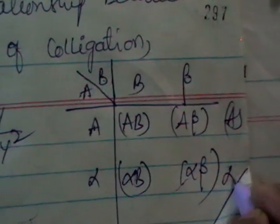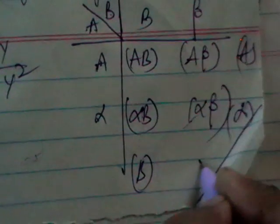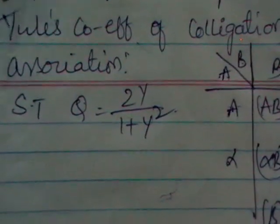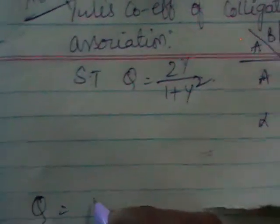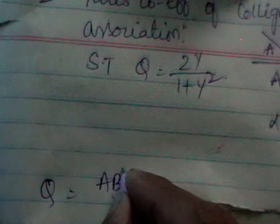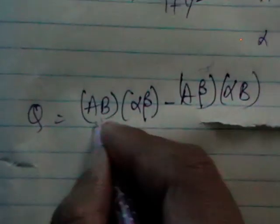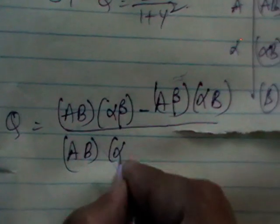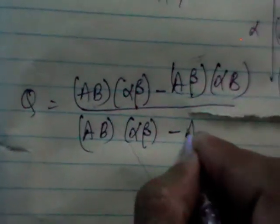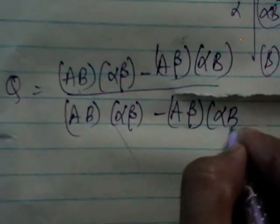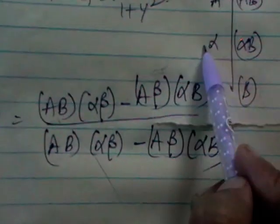This is A, alpha, B, beta. So here in this theorem we are going to write Q in terms of Y. So what is the formula for Q? Q is, you know you should multiply, you should take cross multiplication or diagonally you multiply the terms. As I said to you that writing the table and writing Q and Y formulas you should know. Write this table now and multiply these two in this way.